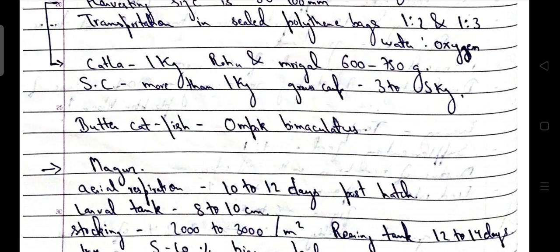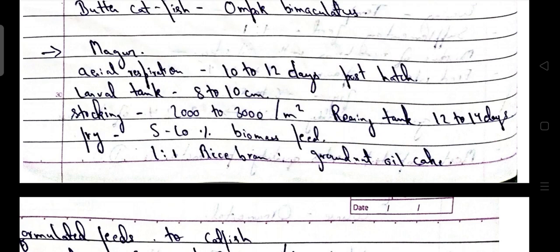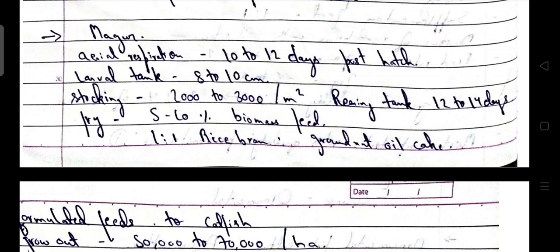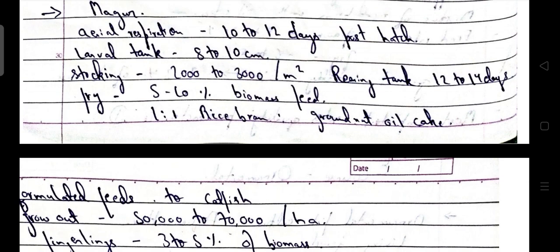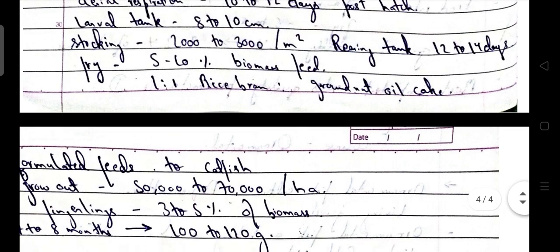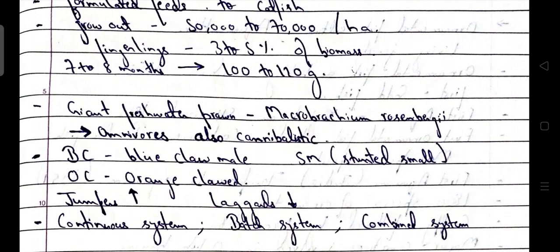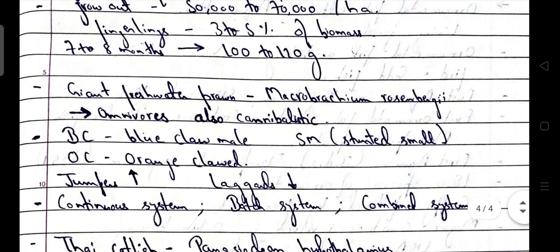Katla maximum size is 1 kg; rohu and mrigal 600 to 750 grams; silver carp more than 1 kg; grass carp up to 3 to 5 kg. Butter catfish is Ompok bimaculatus. Magur scientific name is Clarias batrachus, also known as state fish of Bihar. Aerial respiration begins 10 to 12 days after hatching. Larval tank depth is 8 to 10 cm, stocking 2000 to 3000 per m². Rearing tank duration 12 to 14 days. Feeding rate for fry is 5 to 10% of biomass, feed ratio 1:1 rice bran to groundnut oil cake. Formulated feed is used for catfishes. Grow out pond stocking density 50,000 to 70,000 per hectare. They reach table size in 7 to 8 months with weight of 100 to 120 grams.